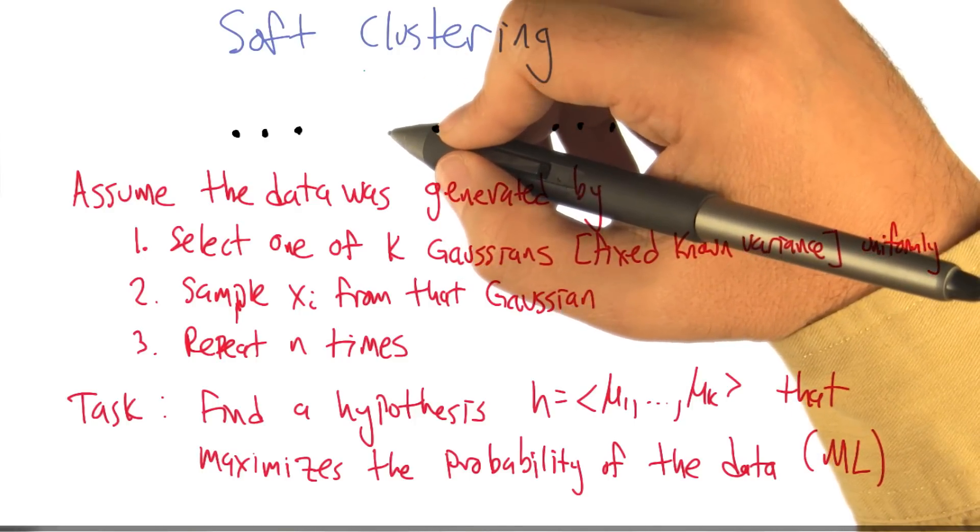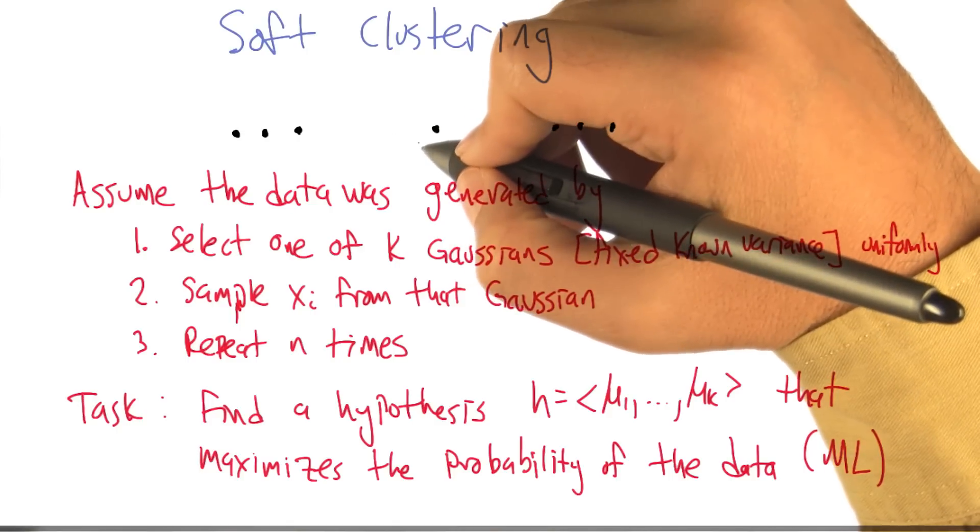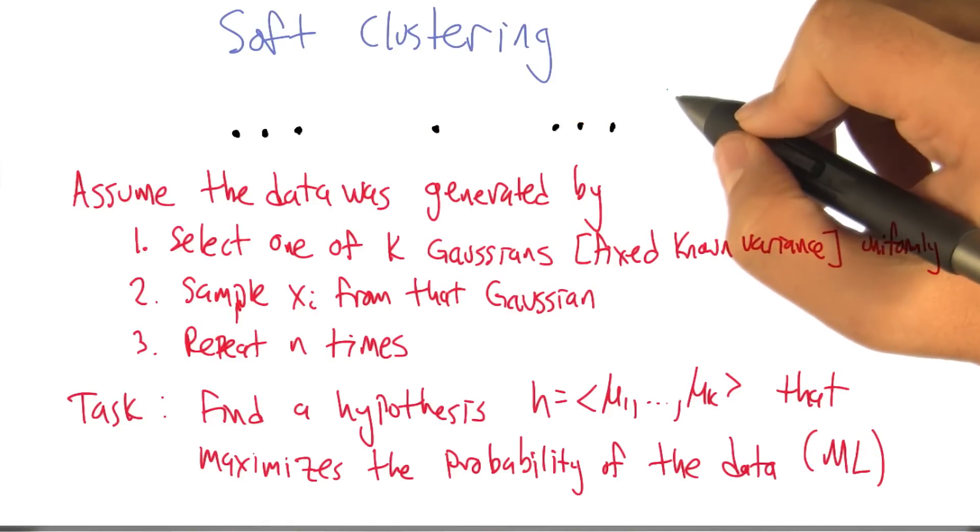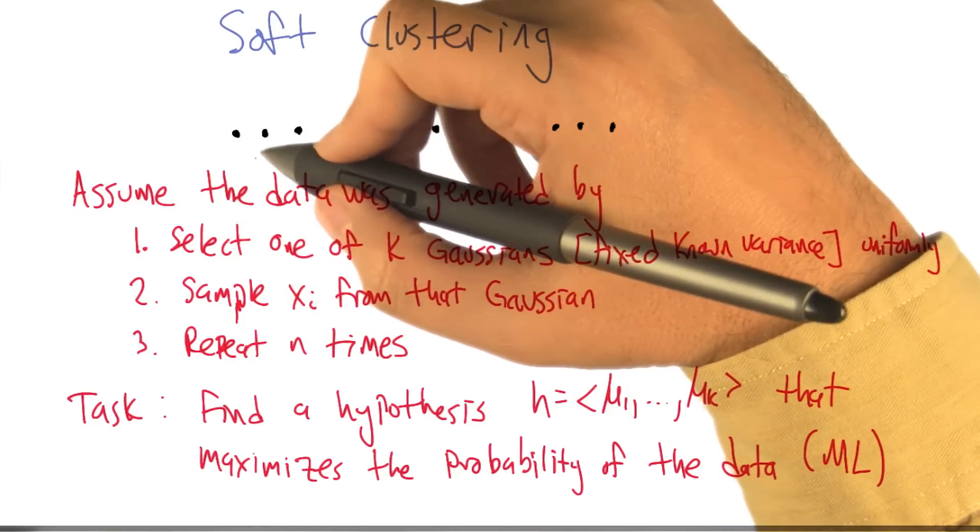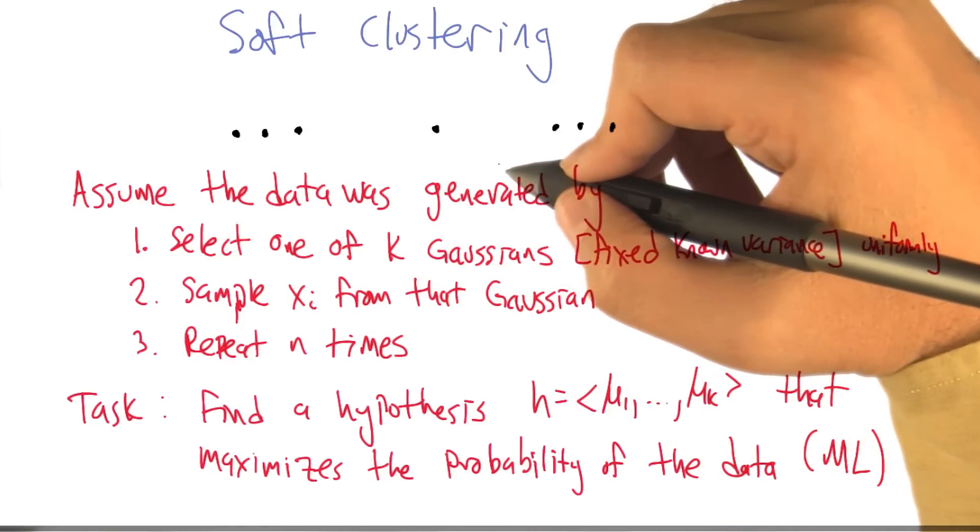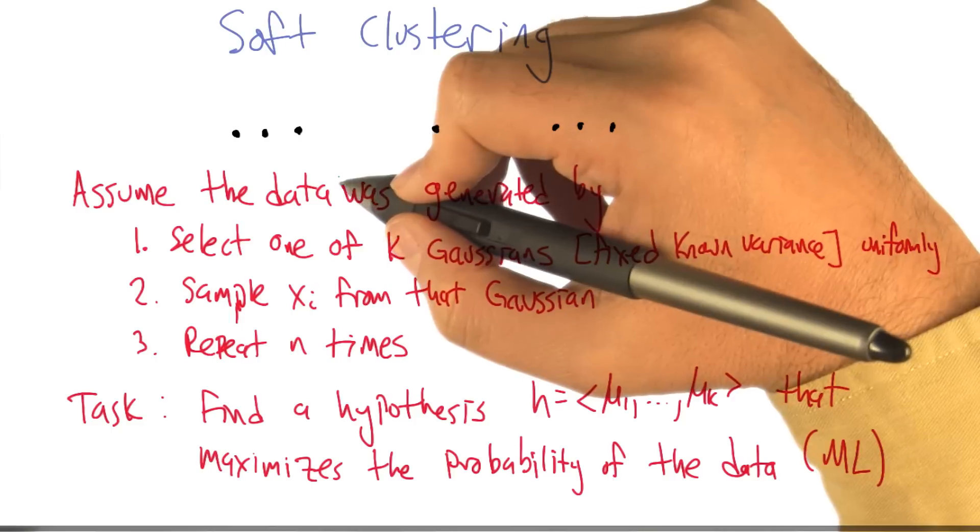All right, so to do this, we're going to have to connect up a probabilistic generative process with the data that we actually observe. So let's assume, and there's many ways to go down this road, but we're going to go down the road this way.